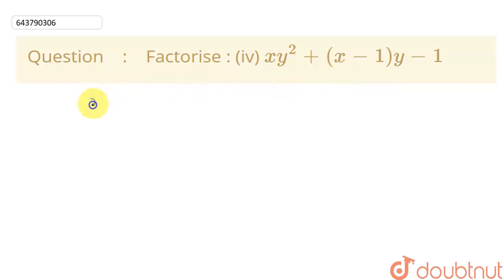I can write this equation as xy square. Let me multiply y with this x minus 1. This will give me x into y will give me plus xy, and this minus 1 into y will give me minus y, and minus of 1. So that will be my equation.